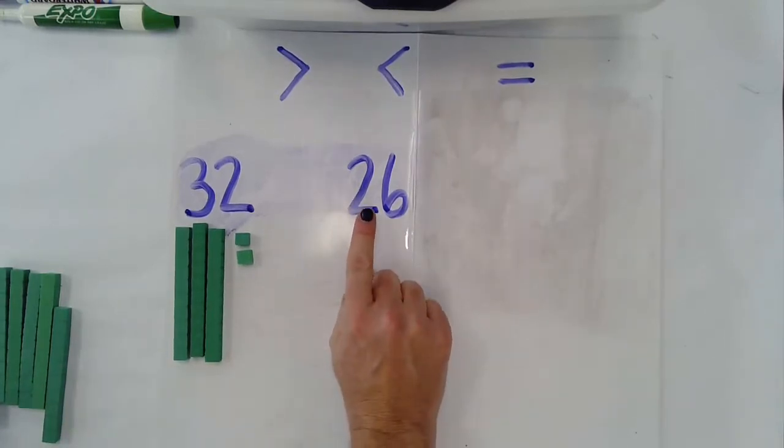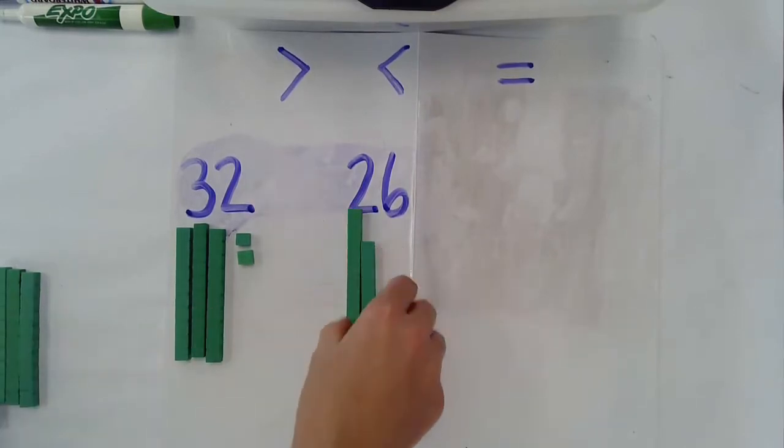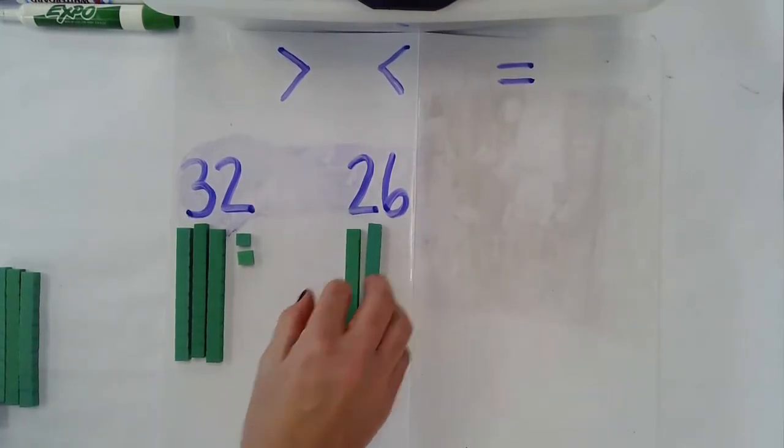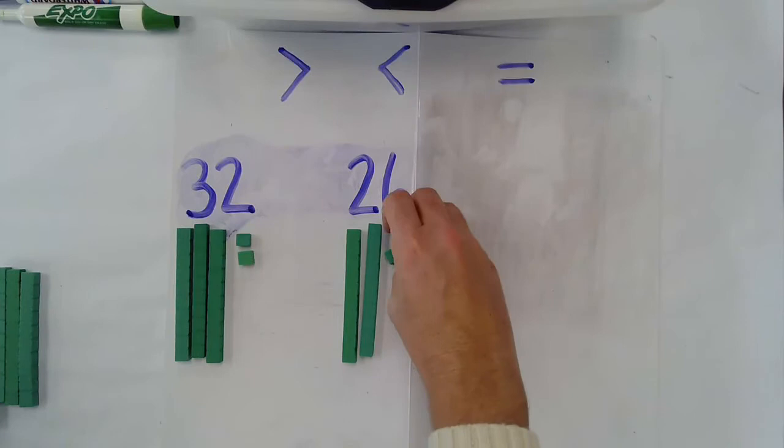Look at this number. I see there is 2 in the tens place, which means I'm going to have 2 tens, and then there is 6 ones.